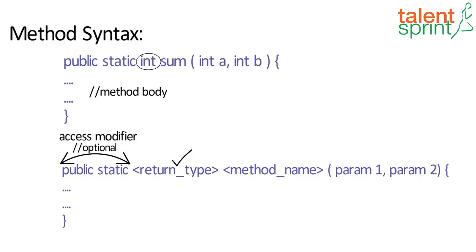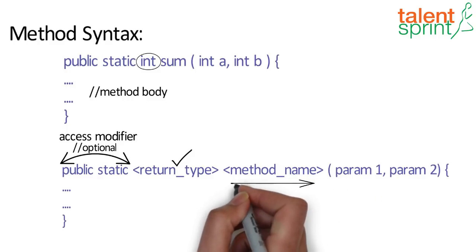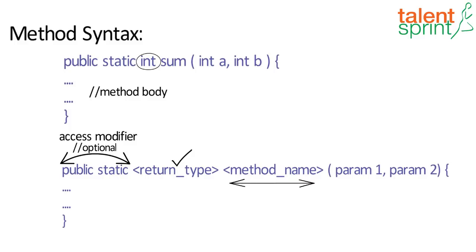The method name should be relevant to what your program is doing. Try to keep your method names relevant to what actually you are doing inside the method, so that it is easier for you to get back to the program and understand what it's doing.